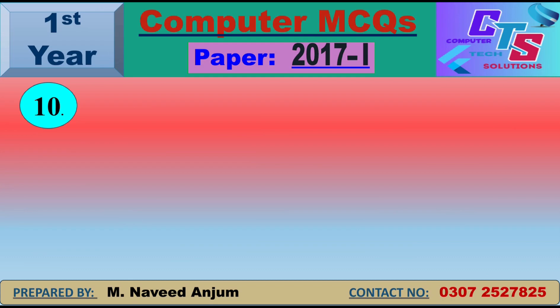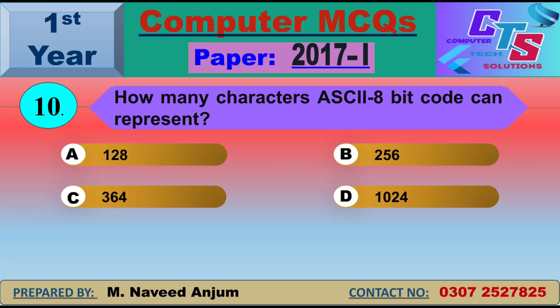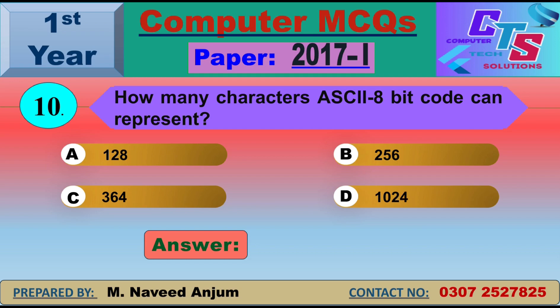Question number 10: How many characters can ASCII 8-bit code represent? Students often make mistakes here. There were two ASCII codes: ASCII 7-bit code represents 128 characters, and ASCII 8-bit code represents 256 characters. Since the question asks about 8-bit code, option B — 256 — will be the right answer.